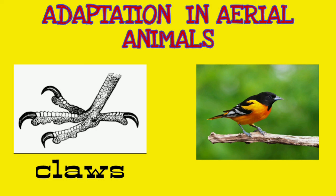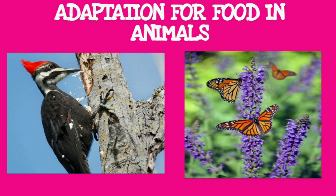Adaptation for food in animals. Woodpeckers generally eat wood-boring insects but also love to eat tree sap, berries, and seeds. Butterflies suck nectar from flowers. Animals can be categorized as herbivores and carnivores, and special adaptations are seen in each category to make the process of feeding easy.